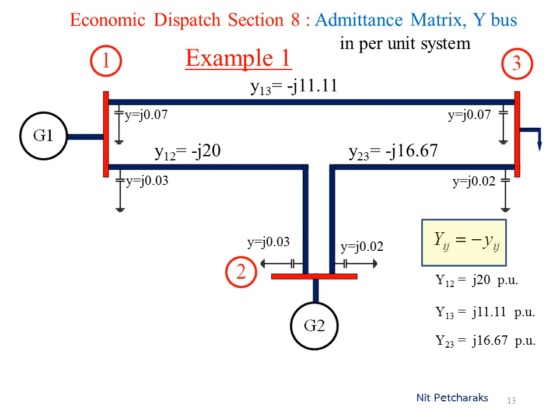Then find the other elements, Y13 and Y23. And then we will find that Y31 equals to Y13 and Y32 equals to Y23.